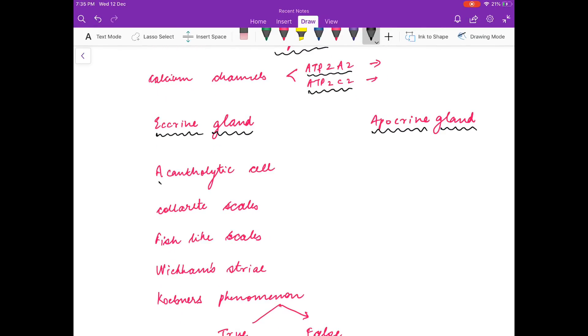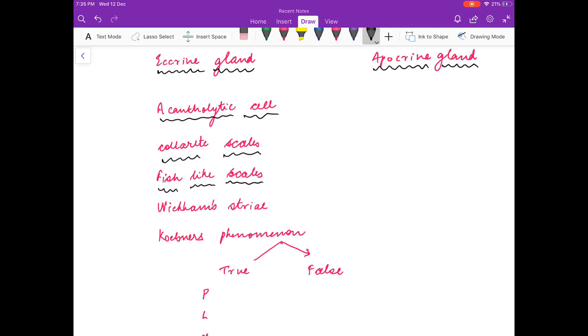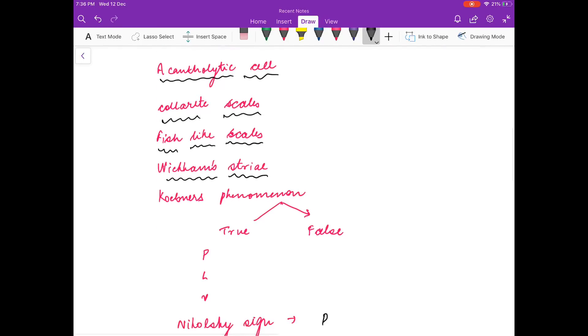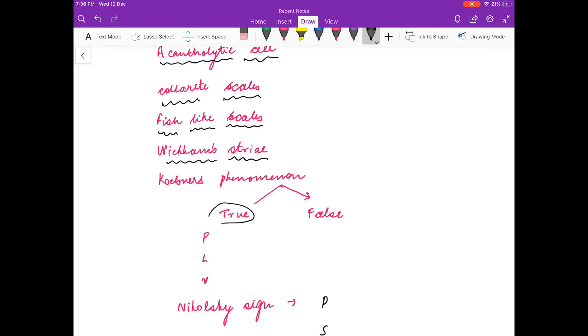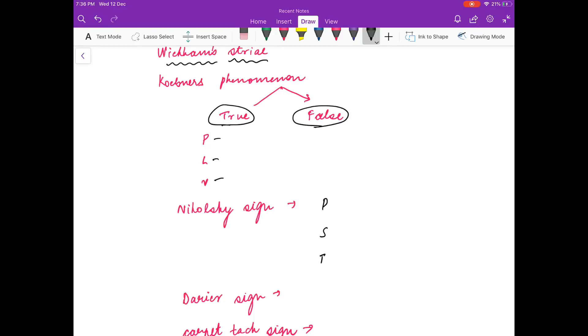Where are acantholytic cells seen? Where are collaret scales seen? Fish-like scales are seen in? Wickham's striae seen in? Koebner's phenomenon? True and false: true is seen in, false is seen in? Nicolsky sign is seen in?